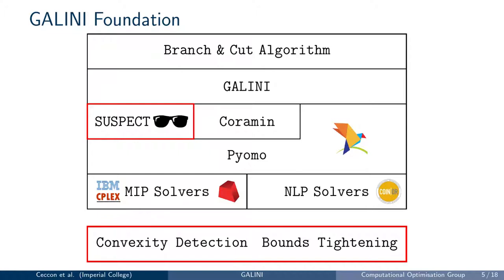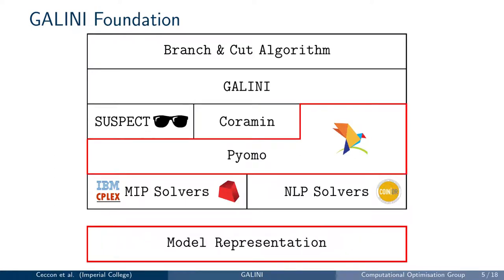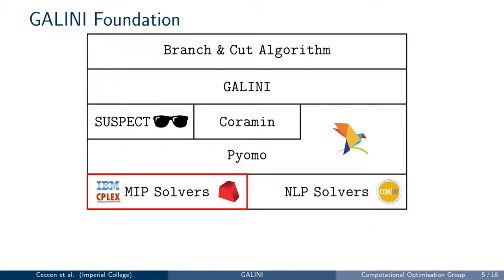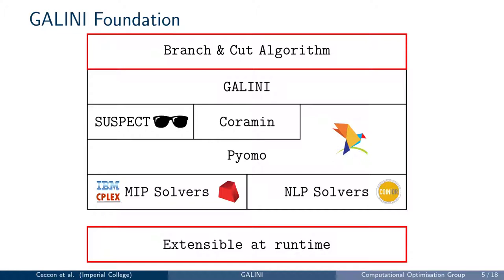Convexity is important when developing relaxations. We use STOMPY to build relaxations and perform optimization-based bound tightening at the beginning of the branch and bound algorithm. Galini solves problems formulated using Pyomo, a modeling library for Python, and also uses Pyomo for the internal representation of the optimization problem. This makes Galini's internals familiar to users that already know Pyomo, and gives us access to all new packages developed for Pyomo and all external solvers available to Pyomo, for example MIP solvers like CPLEX and Gurobi, and non-linear solvers like IPOPT.